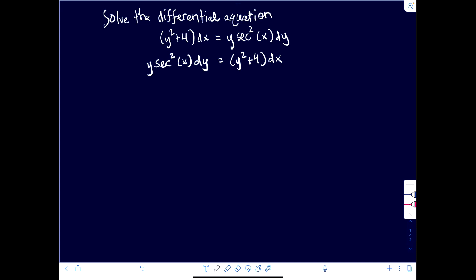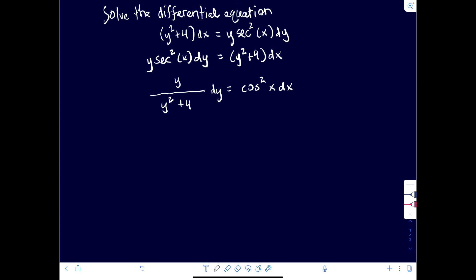So I see that if I divide both sides by y squared plus 4 and multiply both sides by cosine squared of x, because that's the reciprocal function to secant squared of x, we're going to get y over y squared plus 4 dy equals cosine squared of x dx. So it's completely separable.